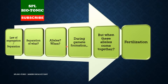Here, separation refers to separation of alleles. These alleles get separated during gamete formation, and they come together during fertilization. The steps of fertilization and gamete formation have been covered in a previous video — the link is given in the description.